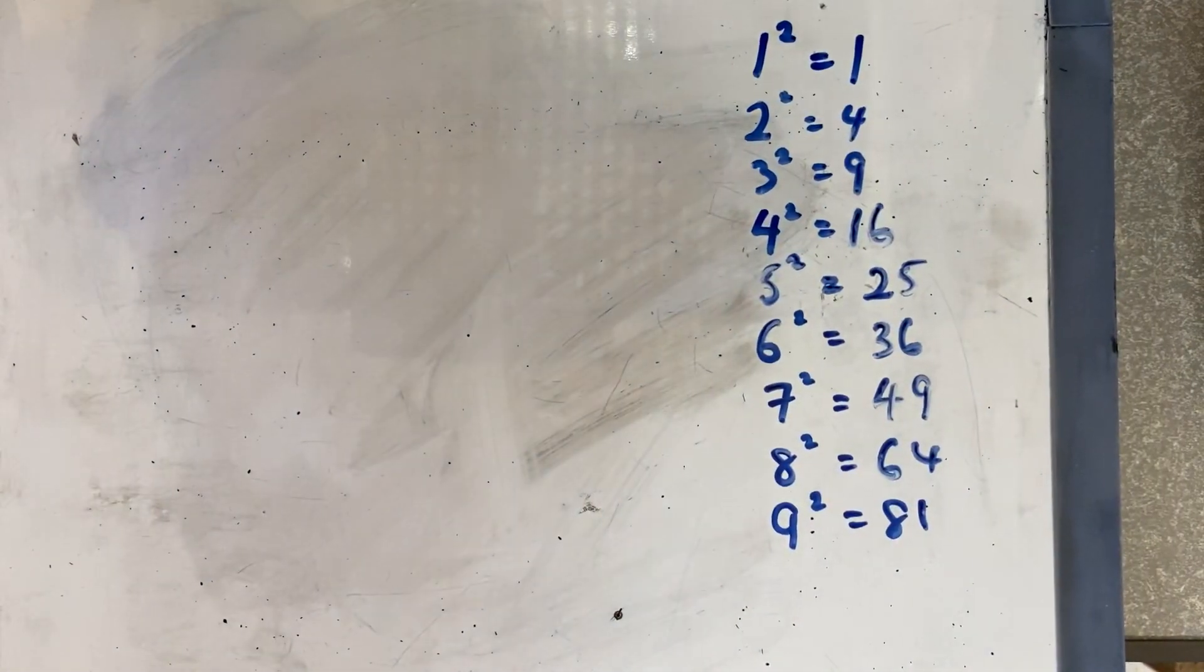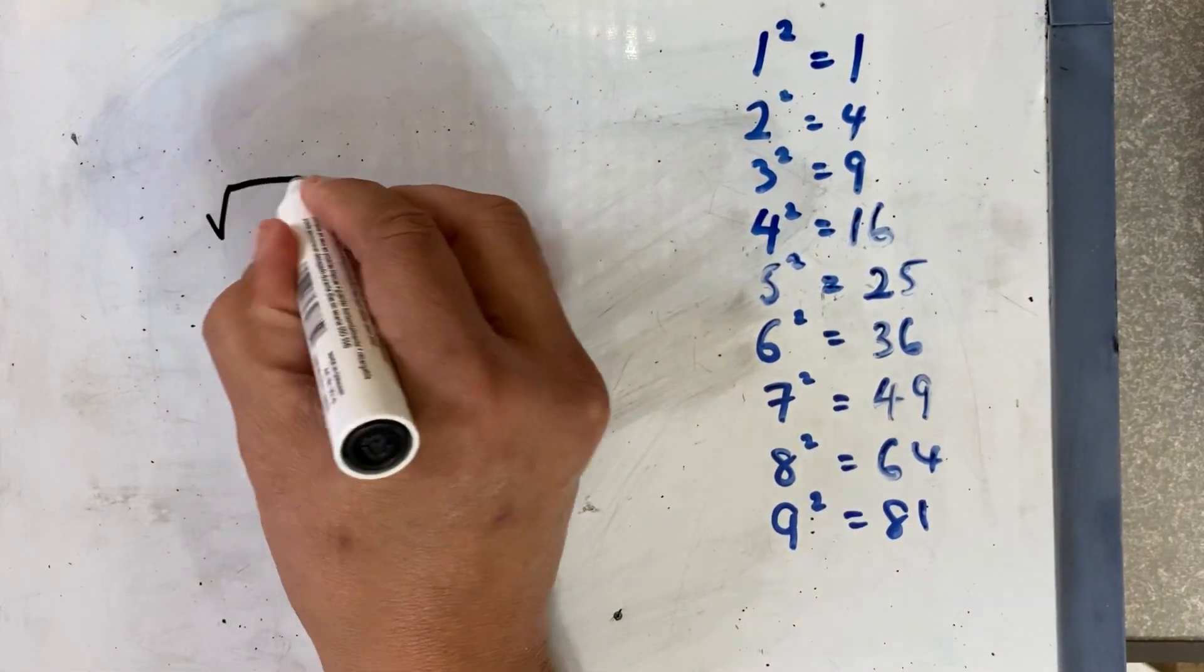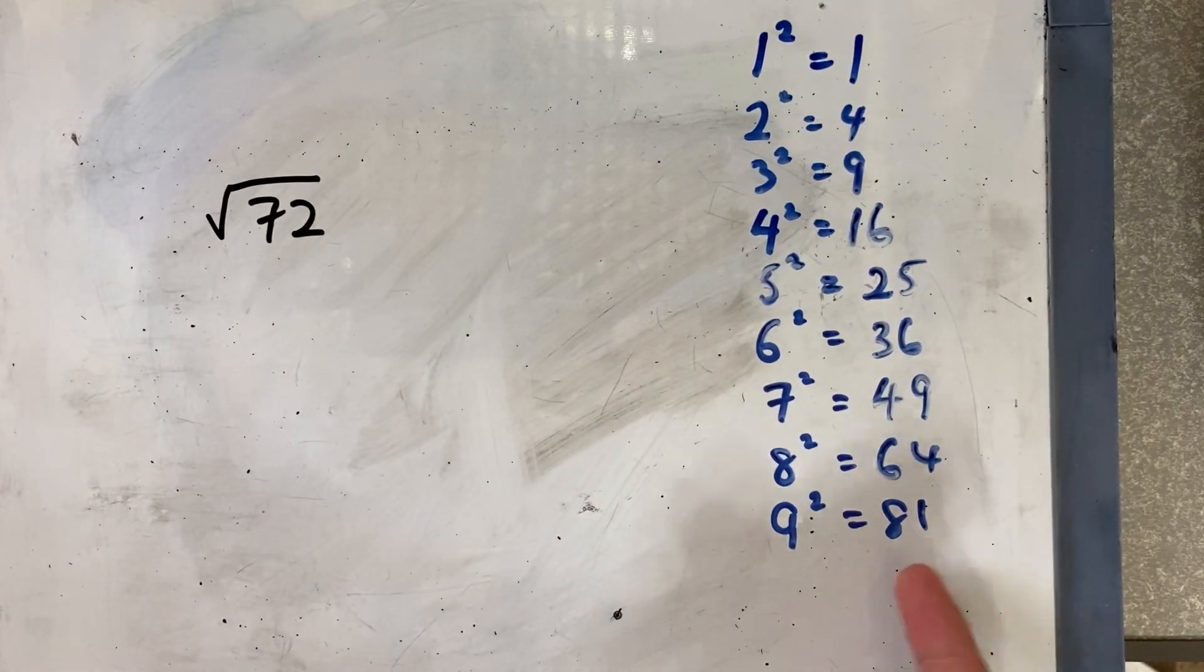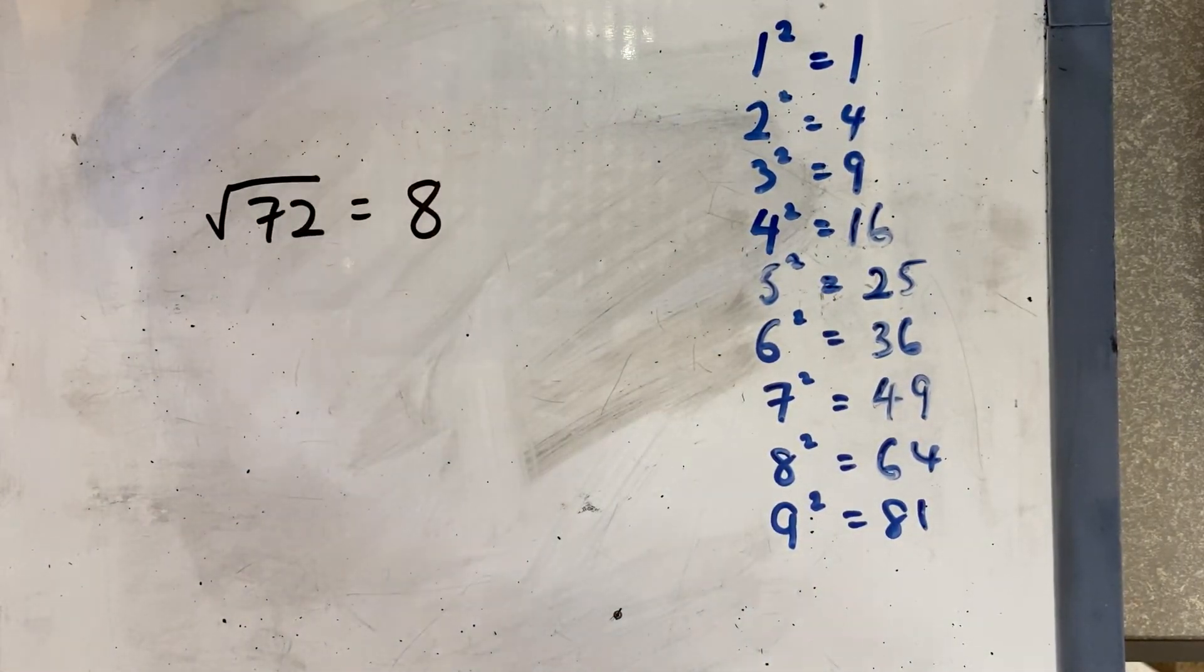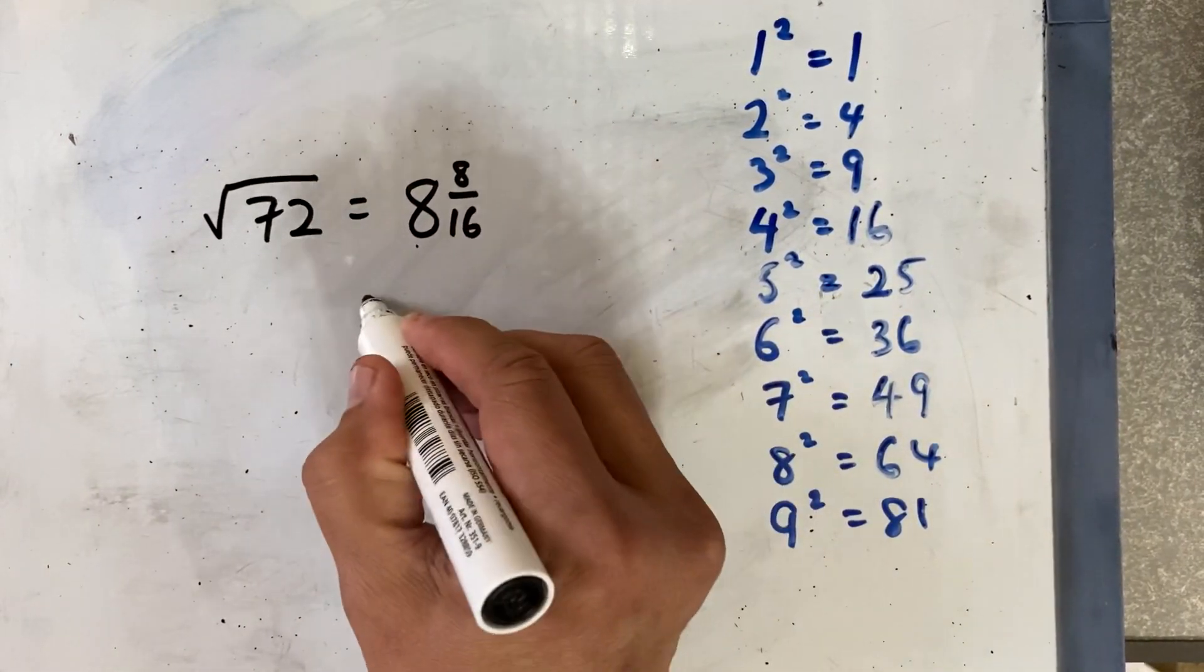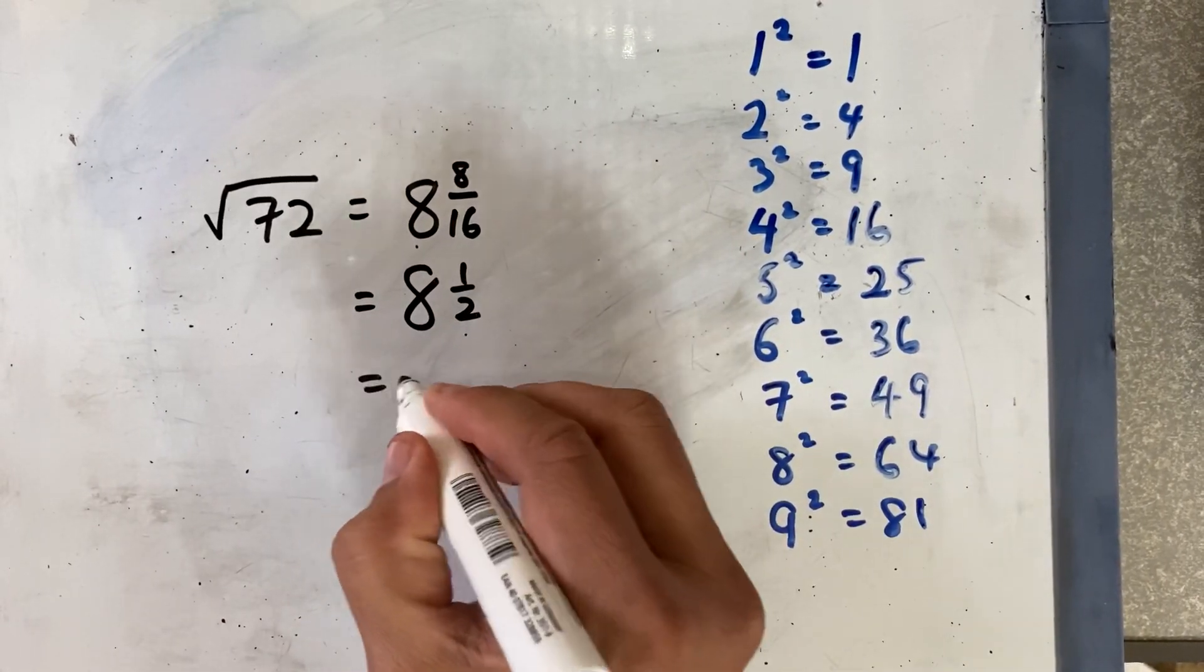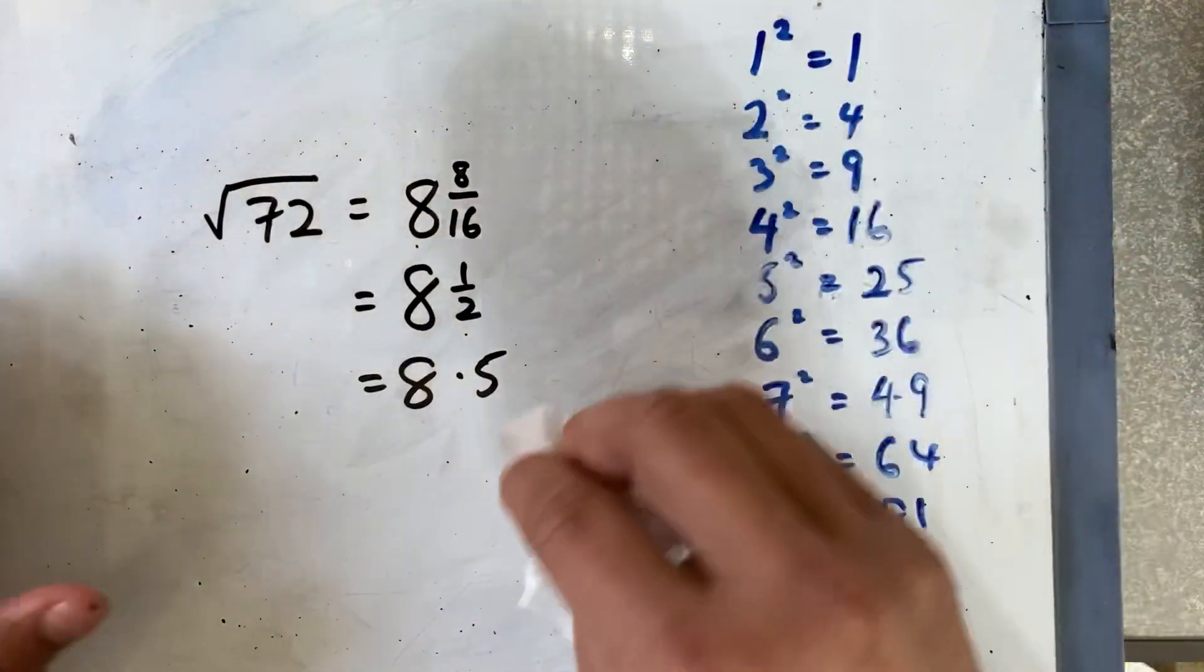The next example is the square root of 72. For 72, 9 is a bit too much, so the closest number is 8. 8 squared is 64, and then we have a remainder of 8. Then you double the whole number, which is 16, so 8 and 8/16 equals 8.5. It is pretty close to your calculator answer.